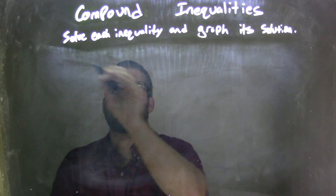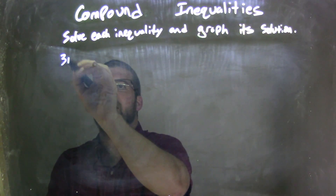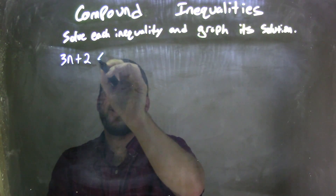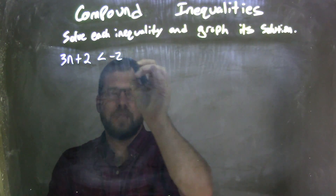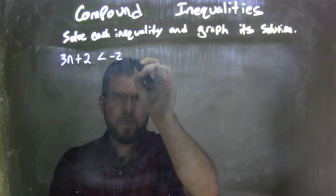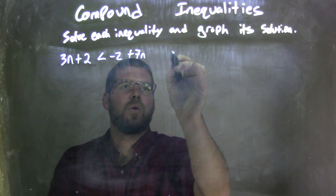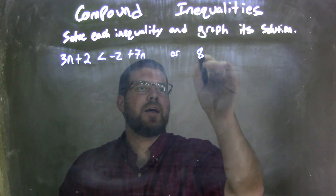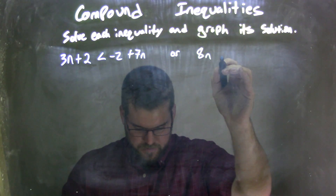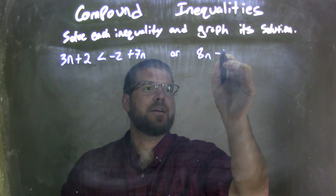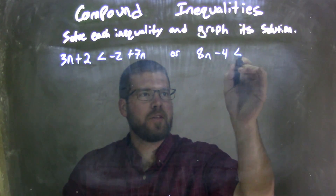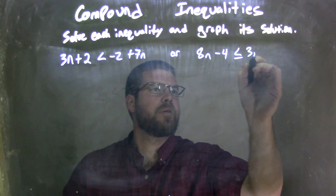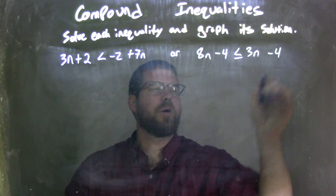So if I was given this inequality: 3n plus 2 is less than negative 2 plus 7n, or 8n minus 4 is less than or equal to 3n minus 4.